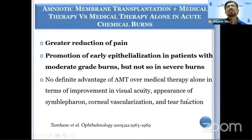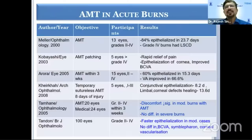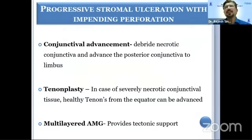One study showed that amniotic membrane transplantation in acute chemical burns done early at between 10 to 14 days improved epithelialization, reduced pain, reduced symptoms, and reduced inflammation. Conjunctival advancement, tenonplasty, or multilayered AMG can be done if there is any stromal melting. Tenonplasty — a pedicle graft of tenon — really helps in vascularization of that area and prevents scleral melting in cases of severe episcleral and scleral ischemia.